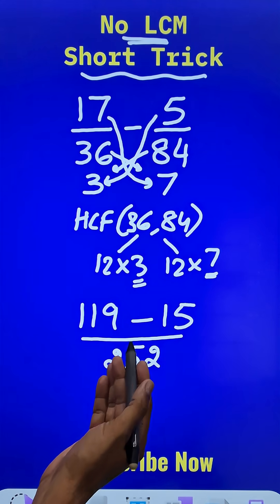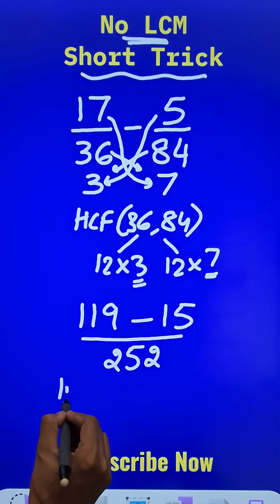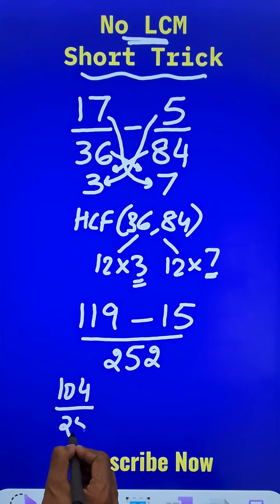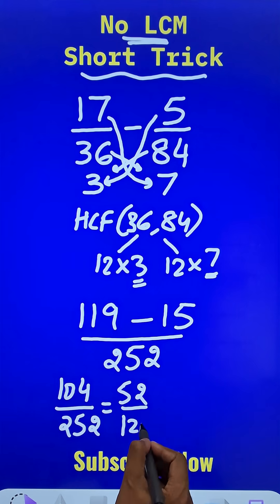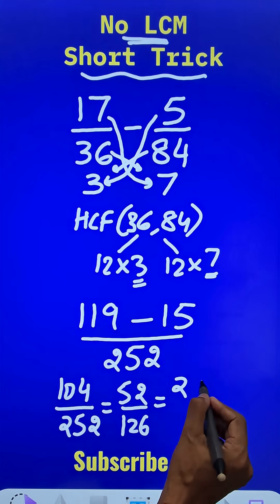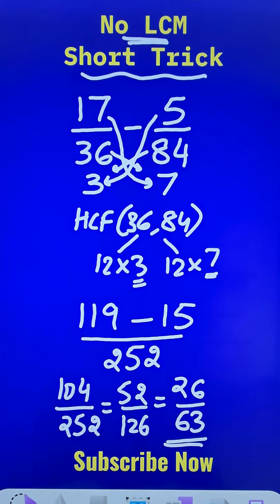So what is the answer here? This gives me 104 upon 252 which can be reduced further to 52 over 126 and further it can be reduced to 26 over 63, which happens to be the correct answer for this subtraction problem.